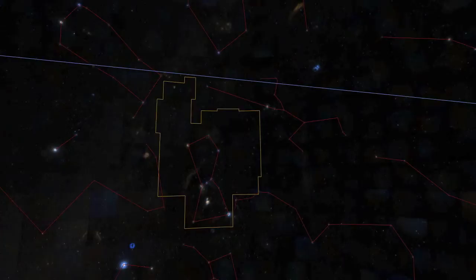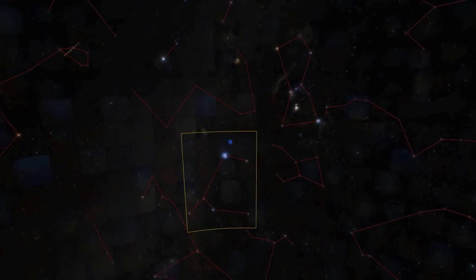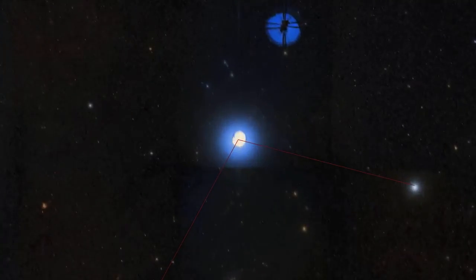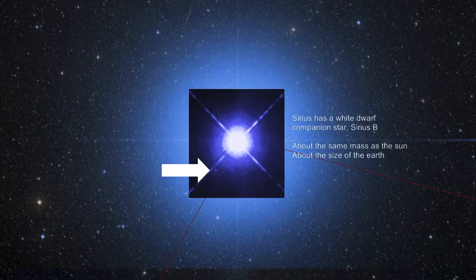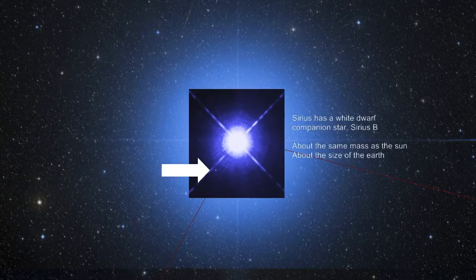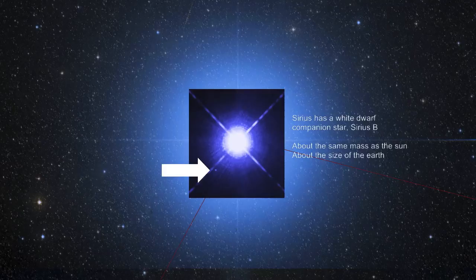Next we go to one of the brightest and most famous stars in the night sky, Sirius. Although it looks like just one star, Sirius also has a companion star, a white dwarf named Sirius B. Even the highest quality photos we have show a tiny white dot next to Sirius. Sirius B is about the same mass as the Sun, but it is just the size of the Earth. This means that a piece of Sirius B about the size of a grape would weigh as much as a car.